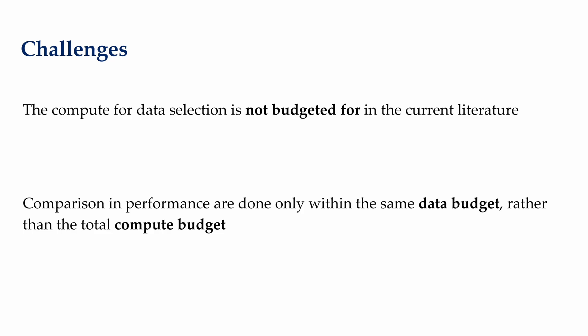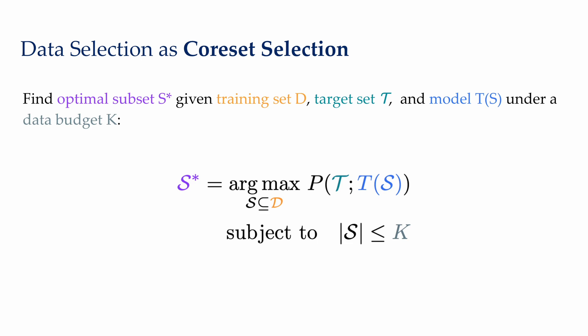In a fixed compute budget setting, we are faced with this inherent trade-off where data selection gives you this additional gain in performance with the same amount of data, but you will receive a certain flops penalty from using better data selection methods.